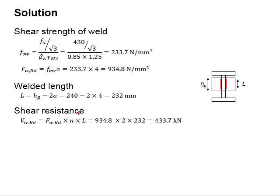The L here can be determined by the height of the plate minus 2a, which is 2 times the throat thickness, assuming that the weld here is not effective at both ends.